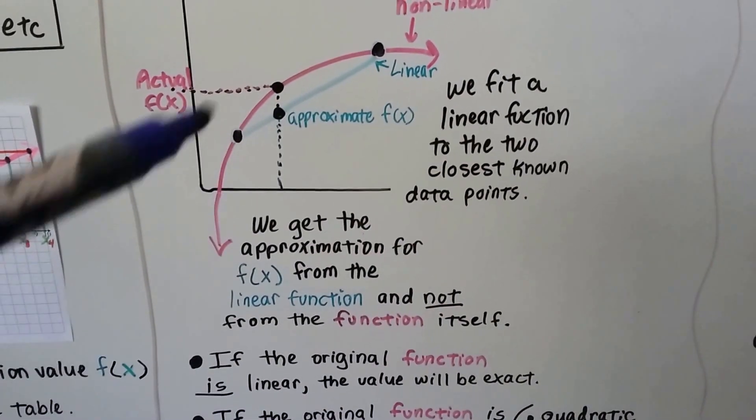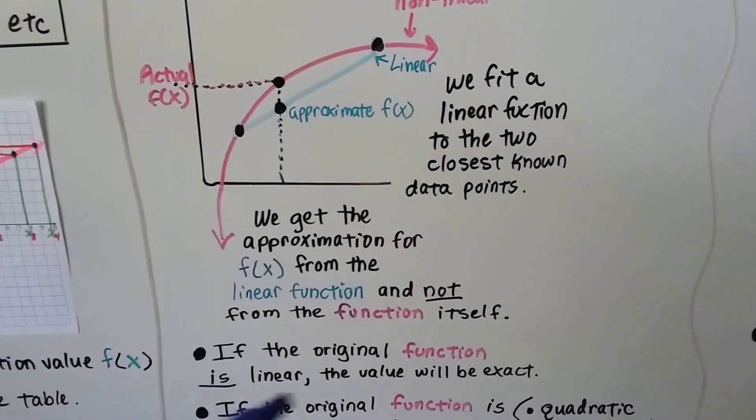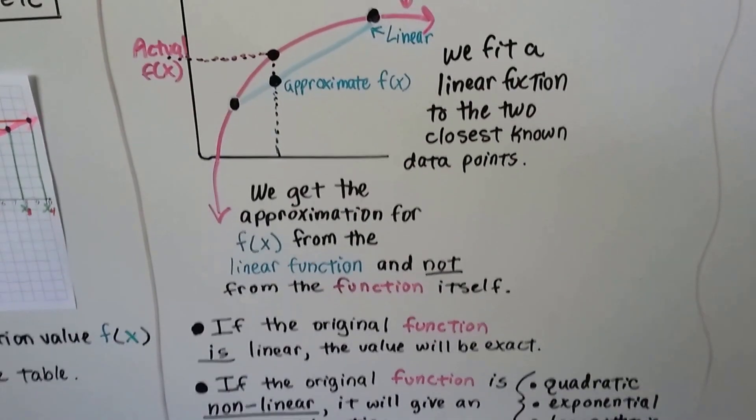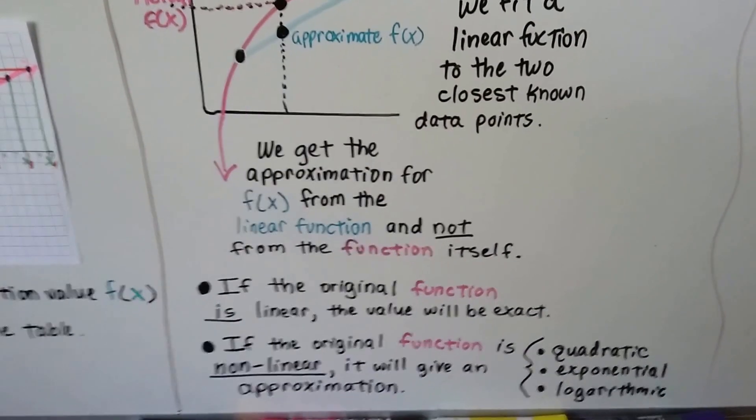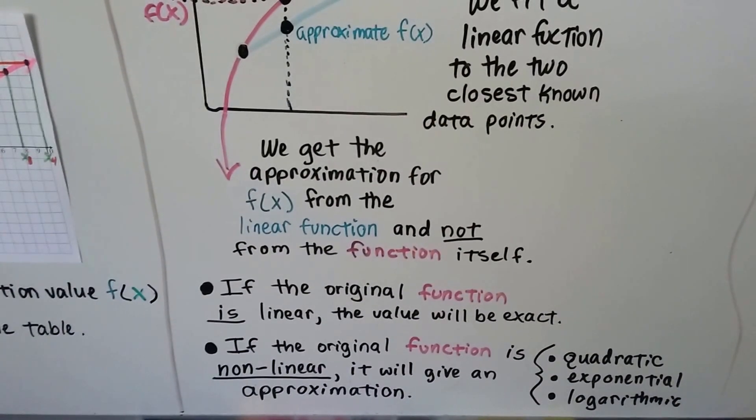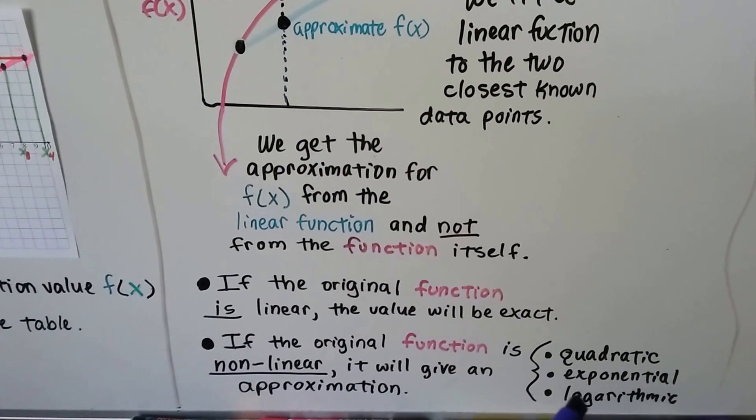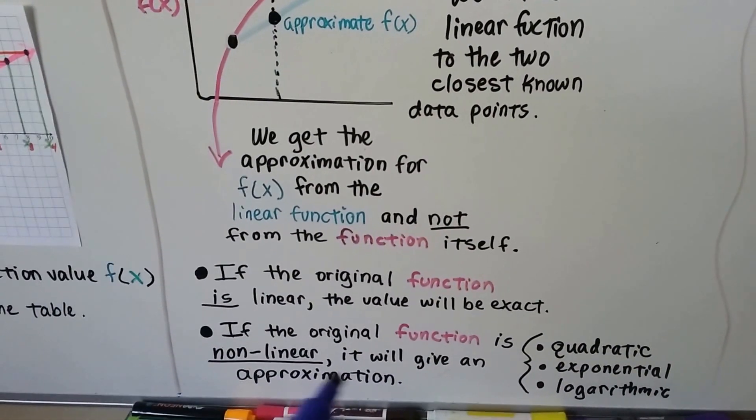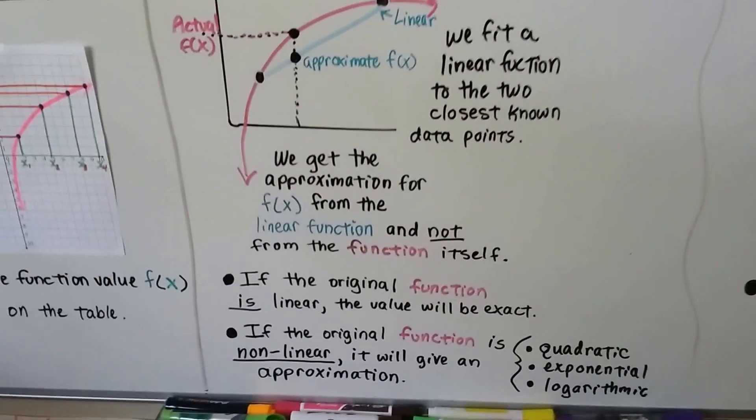If the original function had been straight, our value would be exact. But because it's curved, if the original function is nonlinear, it'll give us only an approximation. So if it's quadratic, exponential, or logarithmic, it's only going to give us an approximation.